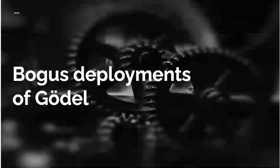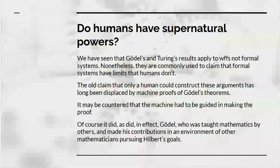Let's look at some bogus uses of Gödel's results. One of these relates to the relationship between mathematicians and formal systems. We've seen these results apply to well-formed formulas, not formal systems. But they're commonly used to claim that formal systems have limits that humans don't have. The old claim that only a human could have constructed these arguments has long been displaced because there have been machine proofs of Gödel's theorems. That prompts the response from idealists that the machine had to be guided in making these decisions. But of course, so did Gödel.